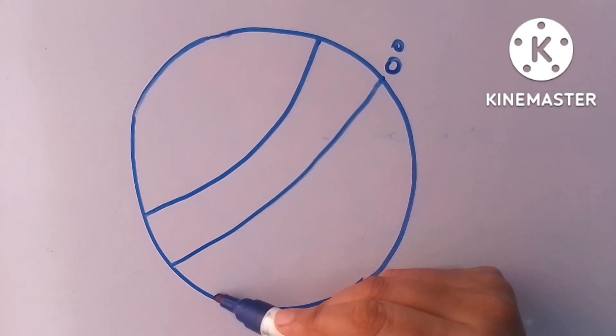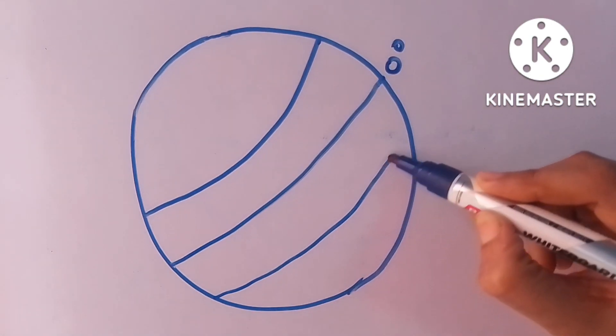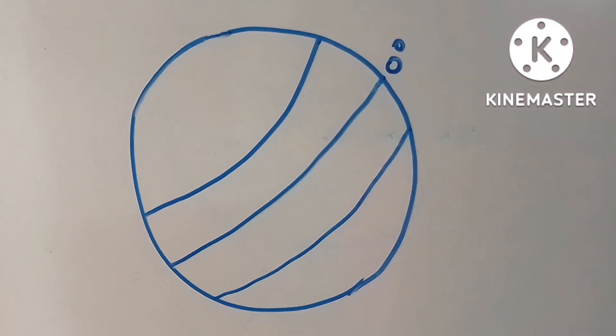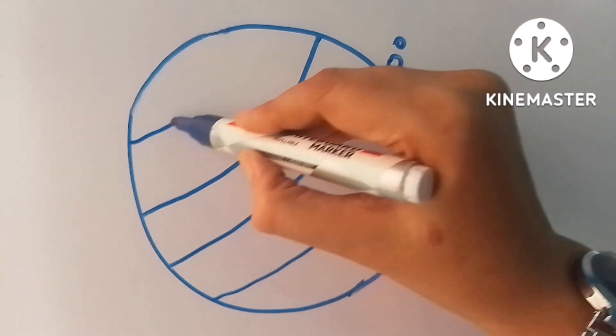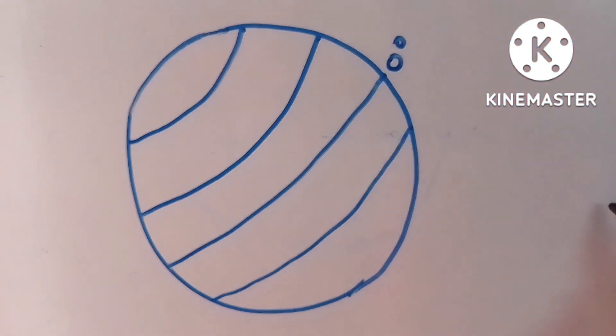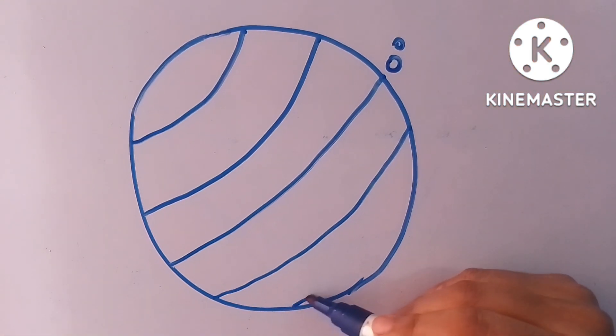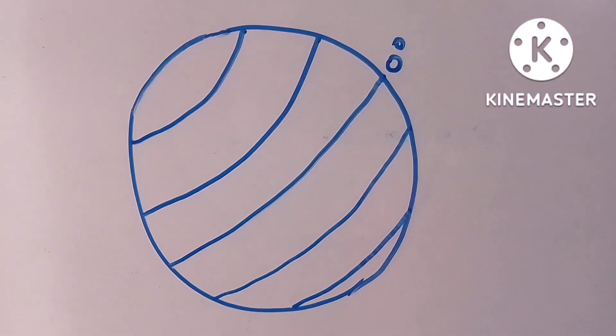At 23.5 degree north is situated tropic of cancer and at 23.5 degree south is tropic of capricorn. This is arctic circle situated at latitude 66.5 degree north and antarctic circle located at latitude 66.5 degree south.